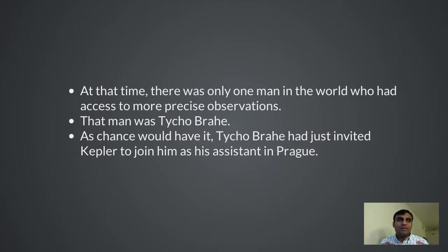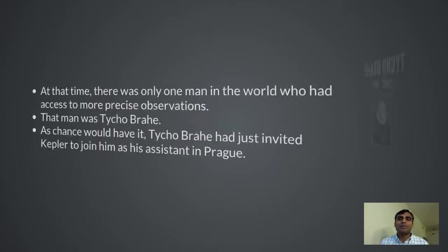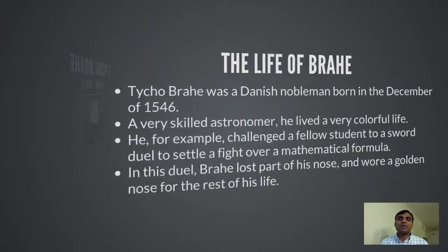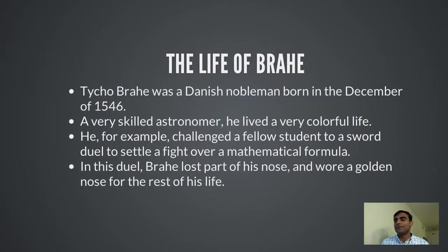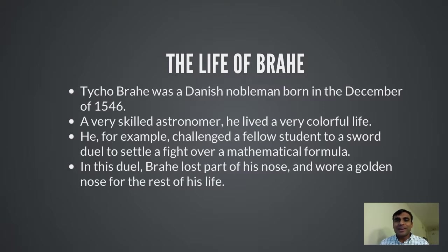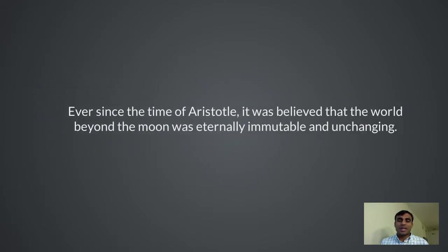As chance would have it, Brahe had just invited Kepler to join him as his assistant in Prague. Tycho Brahe was born in 1546 and was a very skilled astronomer who lived a very colorful life. For example, one time he challenged a fellow student to a duel just to settle a fight over a mathematical formula, and in this fight he lost part of his nose and wore a golden nose for the rest of his life.